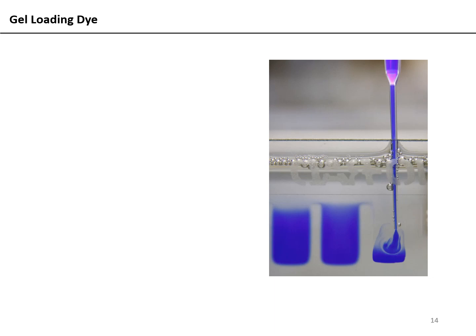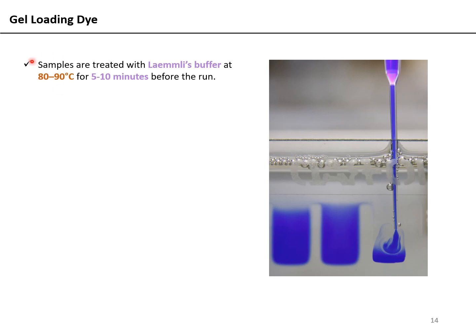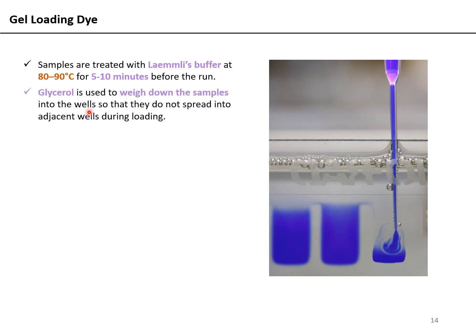It is very important to have a gel loading dye. Samples are treated with Laemmli's buffer — which makes up the gel loading dye — at 80–90 degrees centigrade for 5–10 minutes; this heat treatment helps denature your protein. Glycerol is typically added to weigh down the sample so that when loading it into the well, it sinks to the bottom rather than floating and dispersing throughout the buffer.